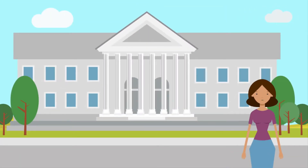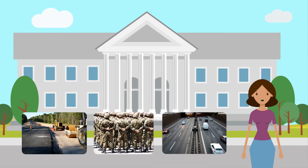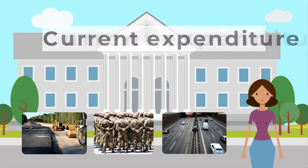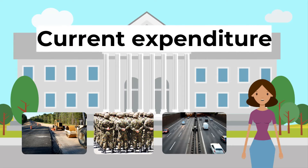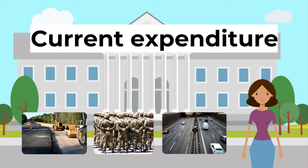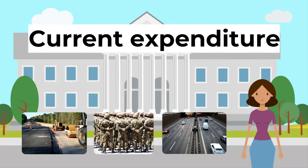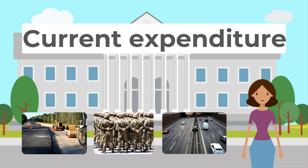How does a government spend its money? Government spending, or public expenditure, accounts for a large share of total spending or aggregate demand in many economies. This can broadly be divided into current expenditure — this is recurring spending including the wages of public sector workers, state pensions, welfare payments, and the running costs of government offices.